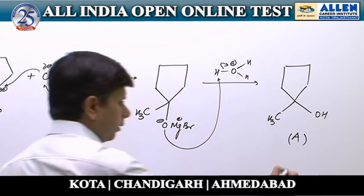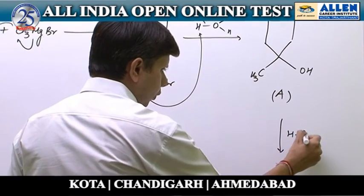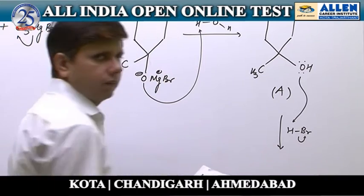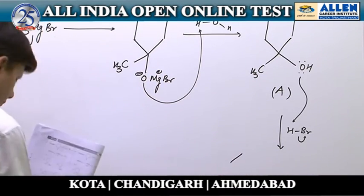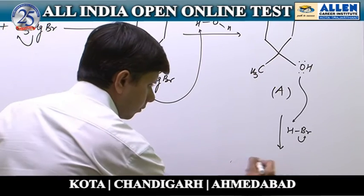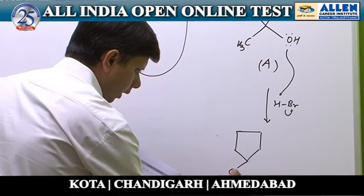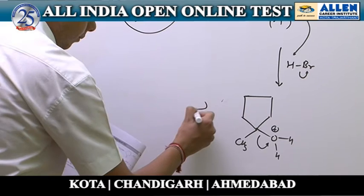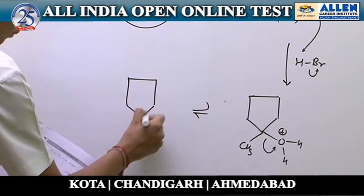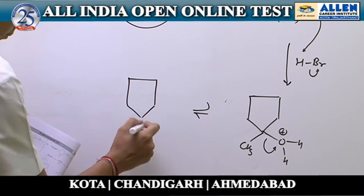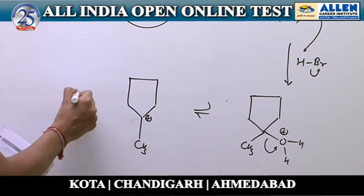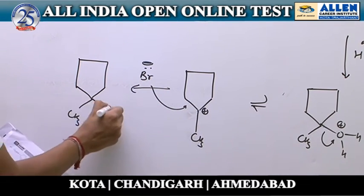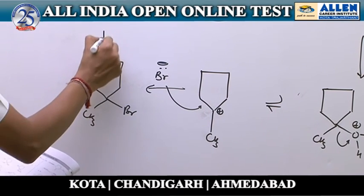Compound A is then reacted with hydrobromic acid. The reaction begins with protonation of the alcohol, followed by formation of a carbocation, and then bromide ion attacks as a nucleophile on this carbocation, giving compound B — the corresponding tertiary bromide.